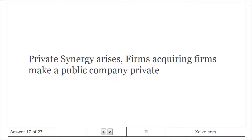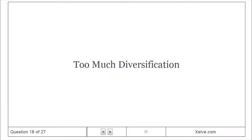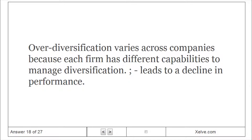Private Synergy arises when firms acquiring firms make a public company private. Too Much Diversification: Over-diversification varies across companies because each firm has different capabilities to manage. Diversification leads to a decline in performance.